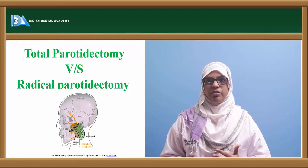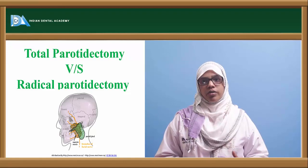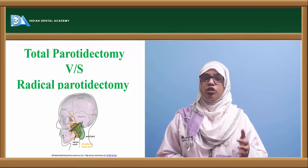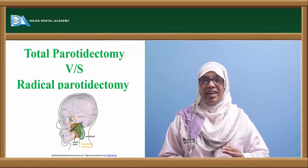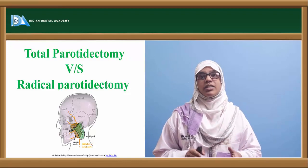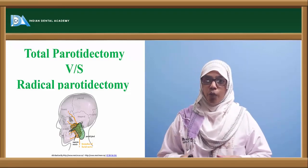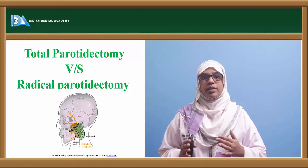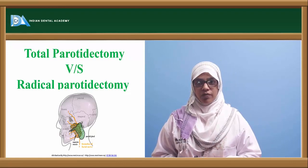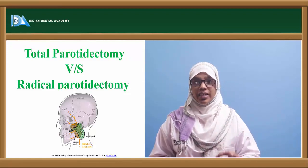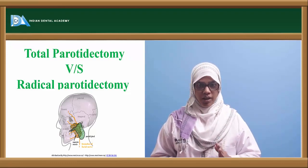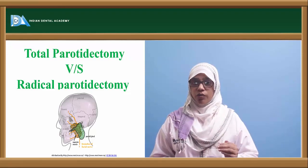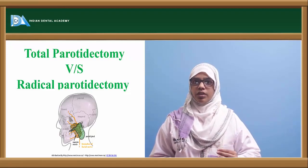Let's move on to total parotidectomy and radical parotidectomy and how the two differ. In total parotidectomy, we try to remove the entire parotid gland while keeping the facial nerve intact. But in case of malignant tumours with high perineural spread, we have to remove the nerve along with the gland — this is termed radical parotidectomy. In this case, a Y-shape or lazy S incision is preferred for better access. Raise a skin and subcutaneous flap, identify the parotido-masseteric fascia, identify the Stensen's duct, and ligate it on both ends before cutting.